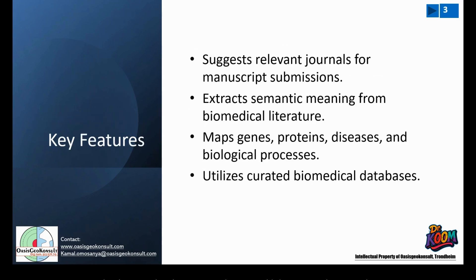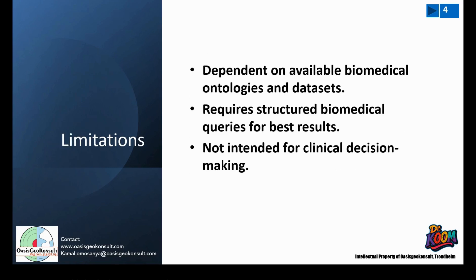The key features of JANE BioSemantics include suggesting relevant journals for manuscript submission, extracting semantic meaning from biomedical literature — and not just biomedical but other sciences as well — and mapping genes, proteins, diseases, and biological processes. It utilizes biomedical databases like PubMed. Its limitations include dependence on available biomedical ontologies and datasets, meaning it may not crawl into databases like Scopus or Web of Science, and it requires structured biomedical queries for best results.